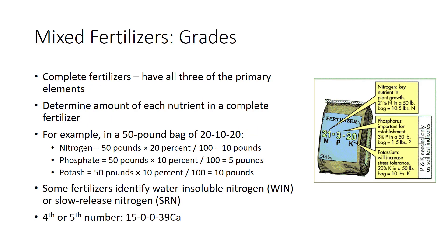Fertilizer containing only one element is called a single-grade fertilizer. Many fertilizers contain two or three nutrients and are called mixed fertilizers. Complete fertilizers have all three of the primary elements. Note that complete fertilizer does not mean that all 14 mineral nutrients are included. To determine the amount of each nutrient in a complete fertilizer, the percentage of the nutrient is multiplied by the weight of the fertilizer.